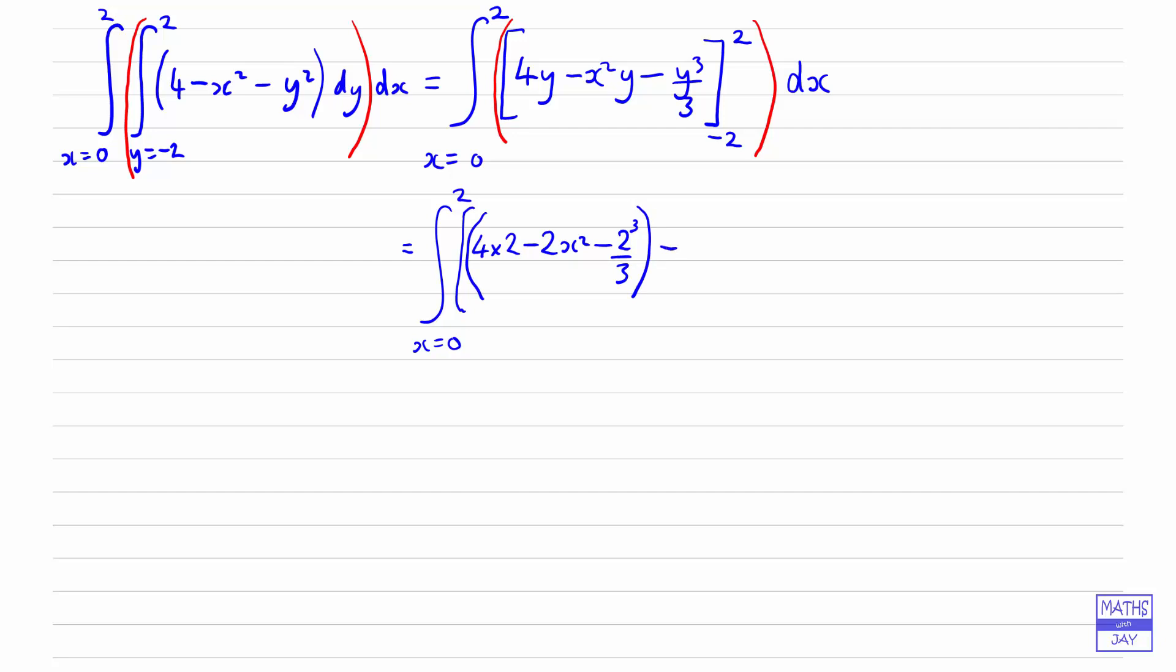And then the bottom one is minus 2. So we're going to get 4 times minus 2. And then minus x squared times negative 2. So that will be plus 2x squared. And then we'll have negative 2 cubed. And there's a minus in there. So that will end up being plus 2 cubed over 3. And then we still want our dx in there.